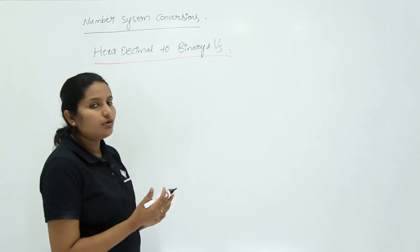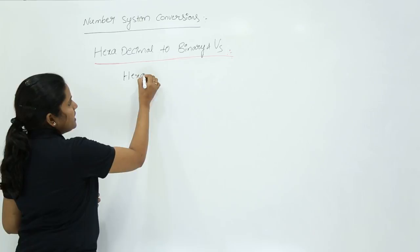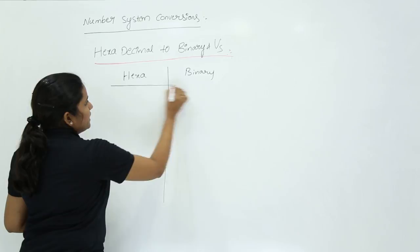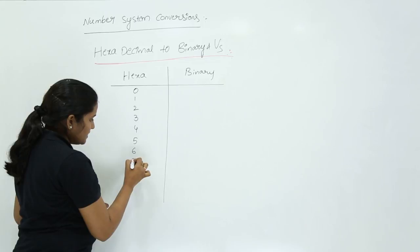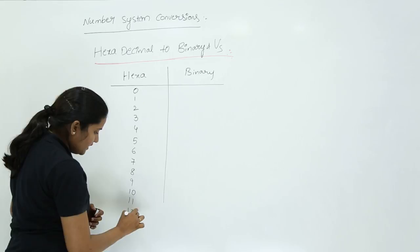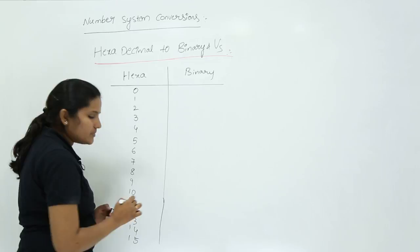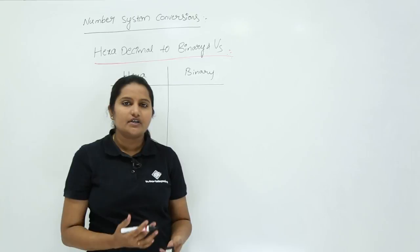We take a hexadecimal range and binary range here. We know that hexadecimal ranges from 0 to 15, that is 0, 1, 2, 3, 4, 5, 6, 7, 8, 9, 10, 11, 12, 13, 14 and 15. These are the range of numbers in hexadecimal. Now we will see how we convert hexadecimal to binary.